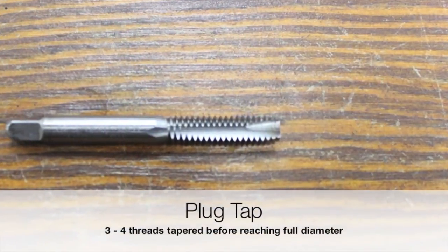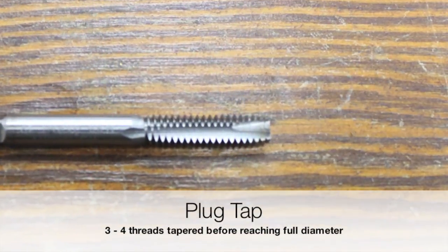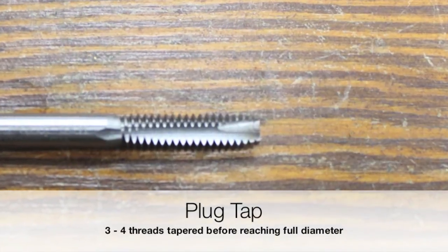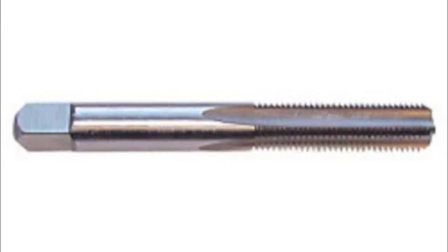A plug tap is used after the taper tap. Plug taps have a taper on the first 3 to 4 threads before full diameter is reached.